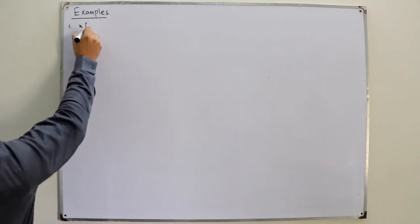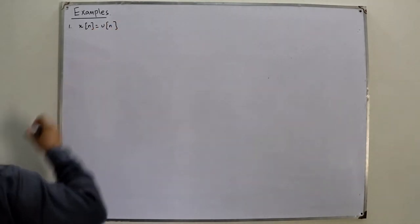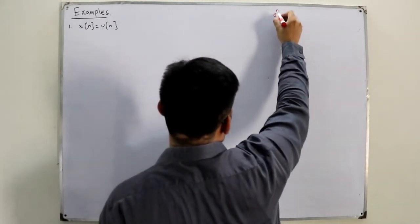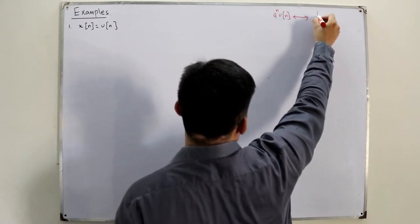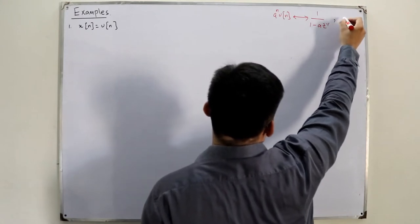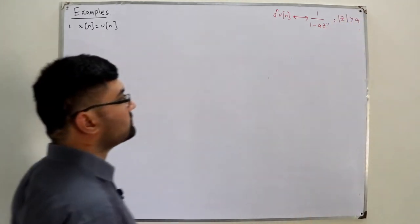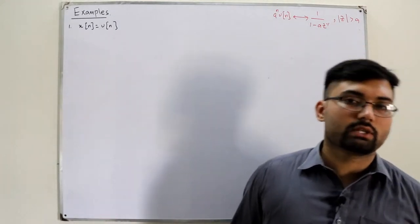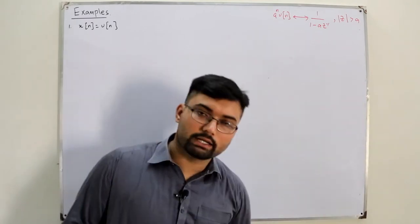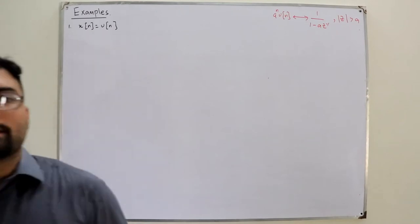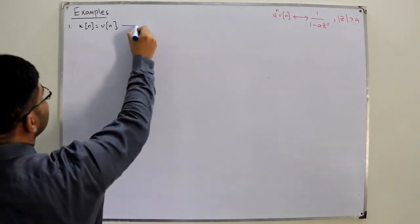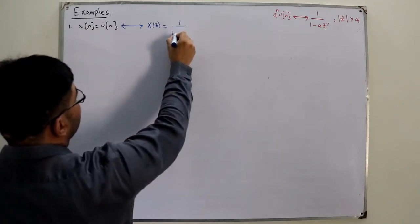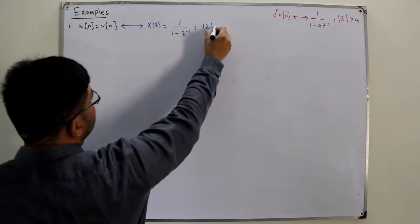The first example: x(n) is a unit step signal, x(n) = u(n). What would be the corresponding Z-transform? We already know that a^n · u(n) has a corresponding Z-transform equal to 1 over (1 - a·z⁻¹), with the region of convergence |z| > |a|. So from that property, the Z-transform of u(n) is 1 over (1 - z⁻¹), with ROC |z| > 1.